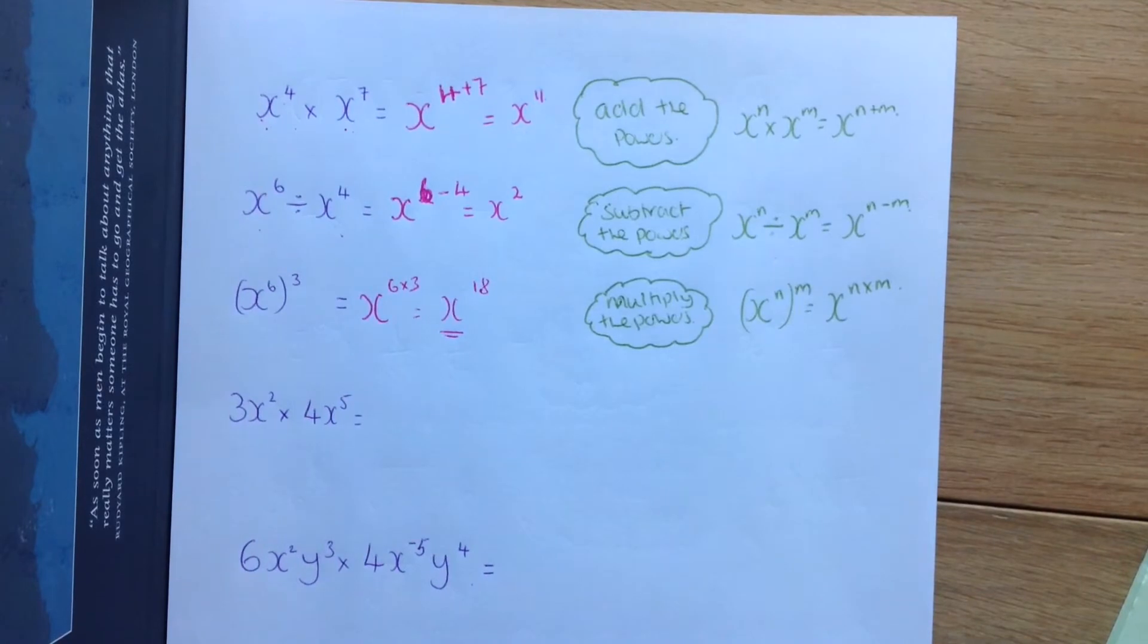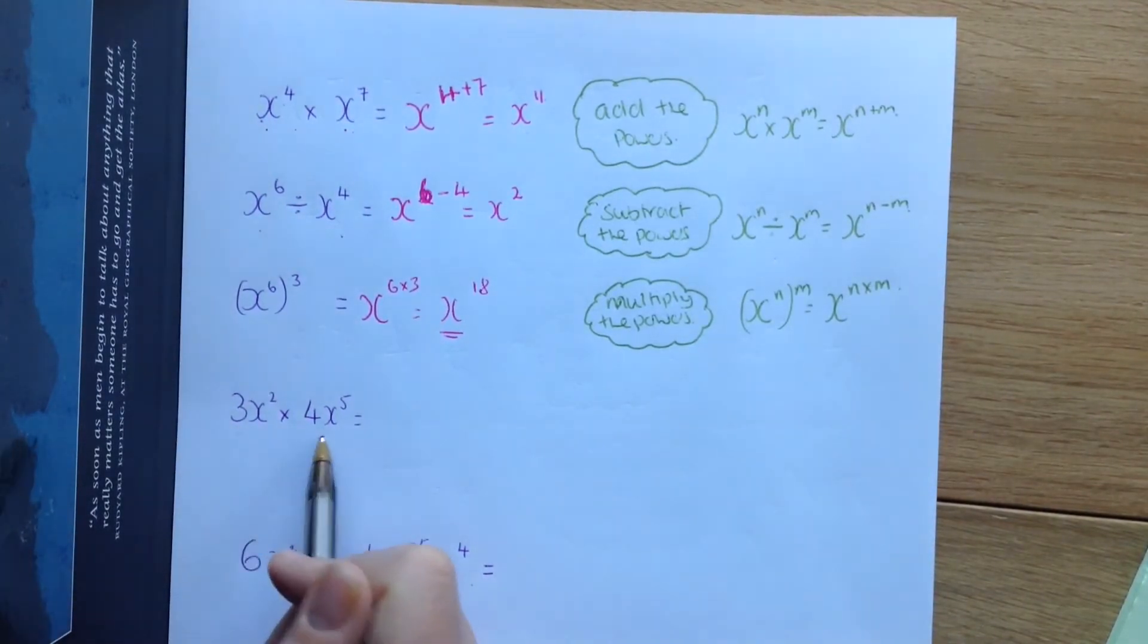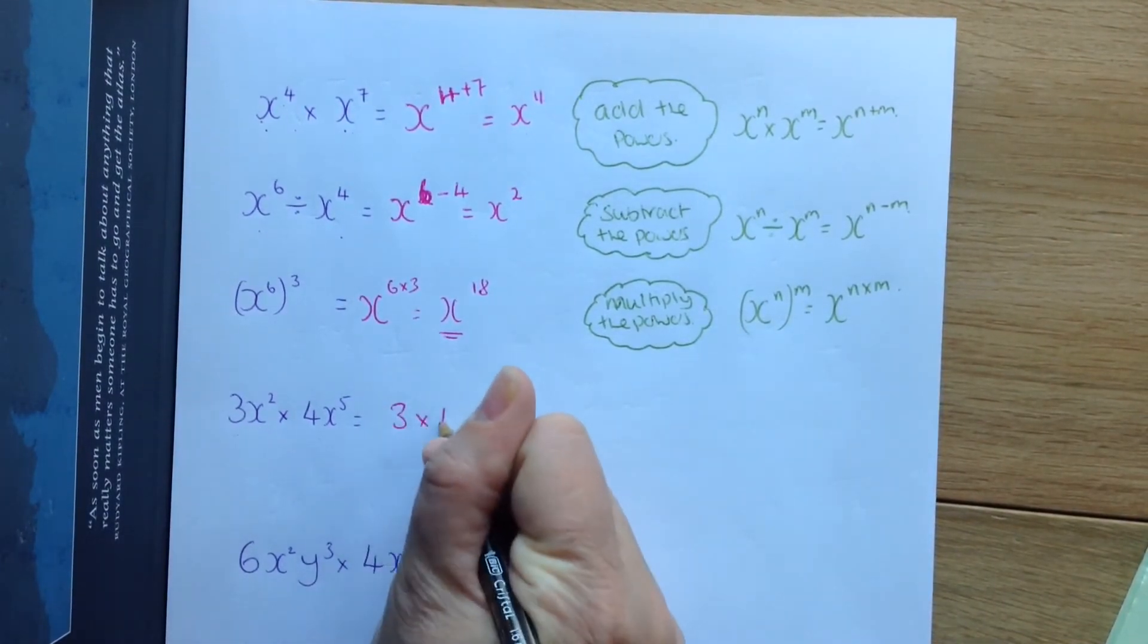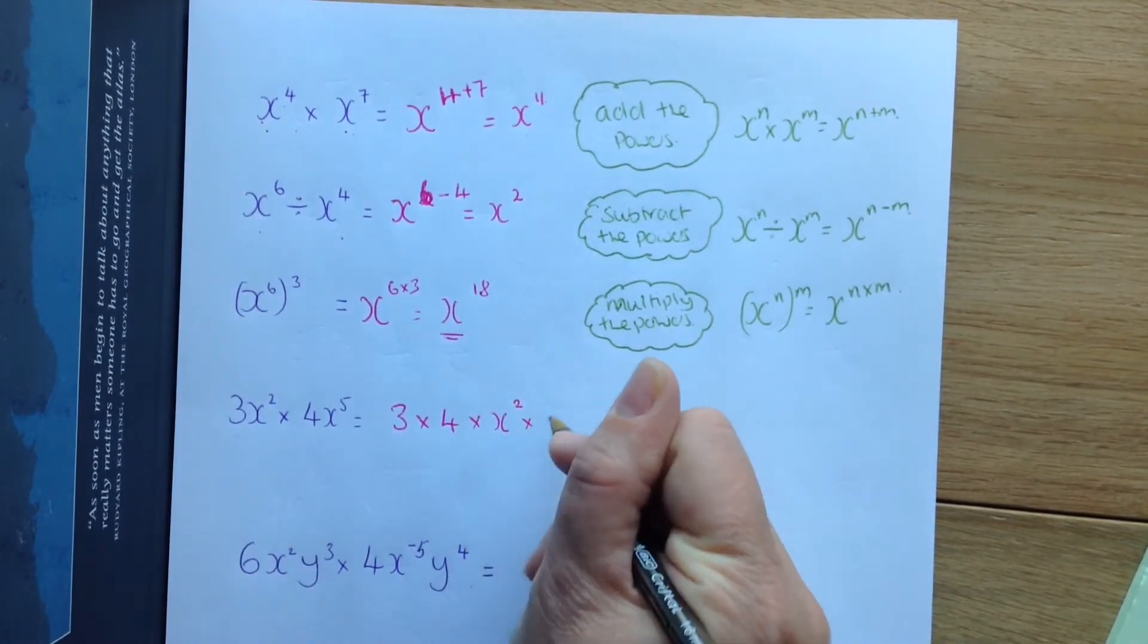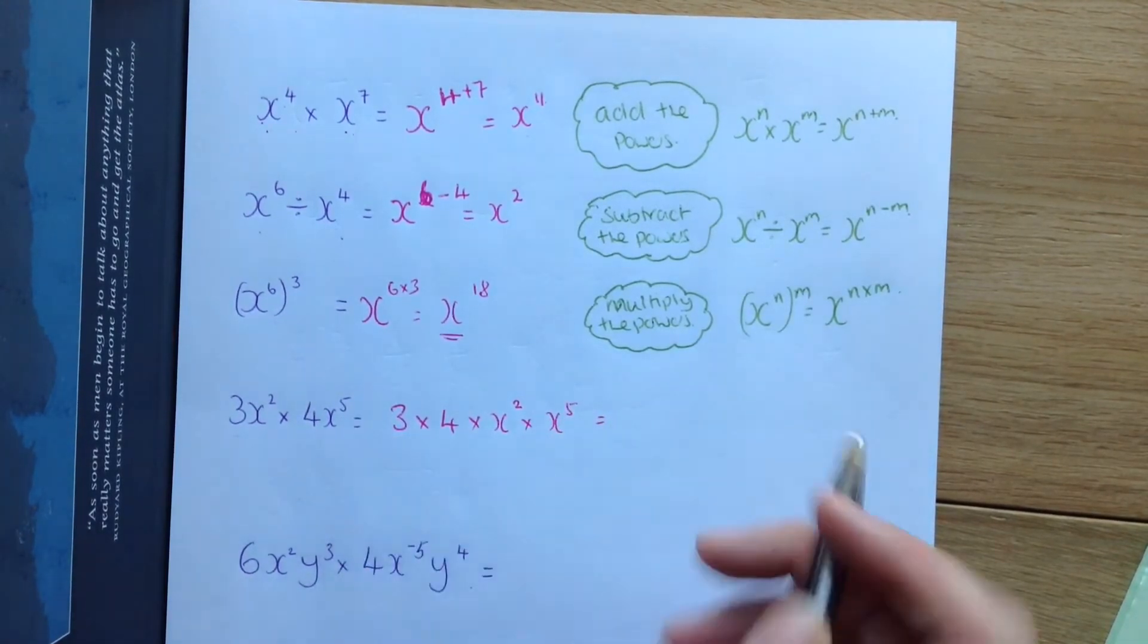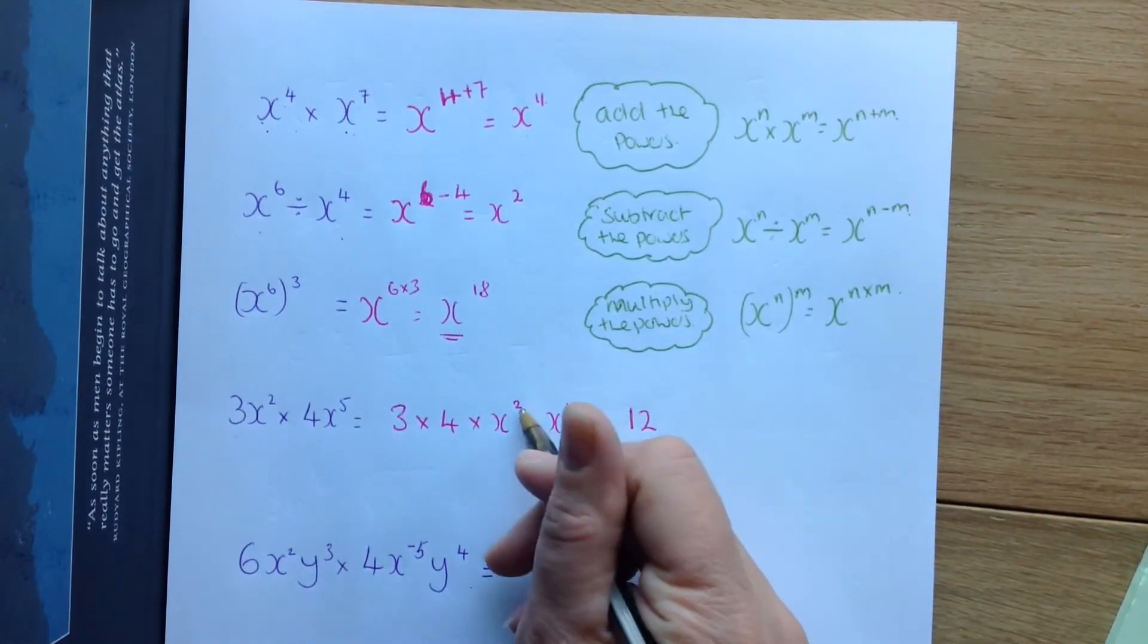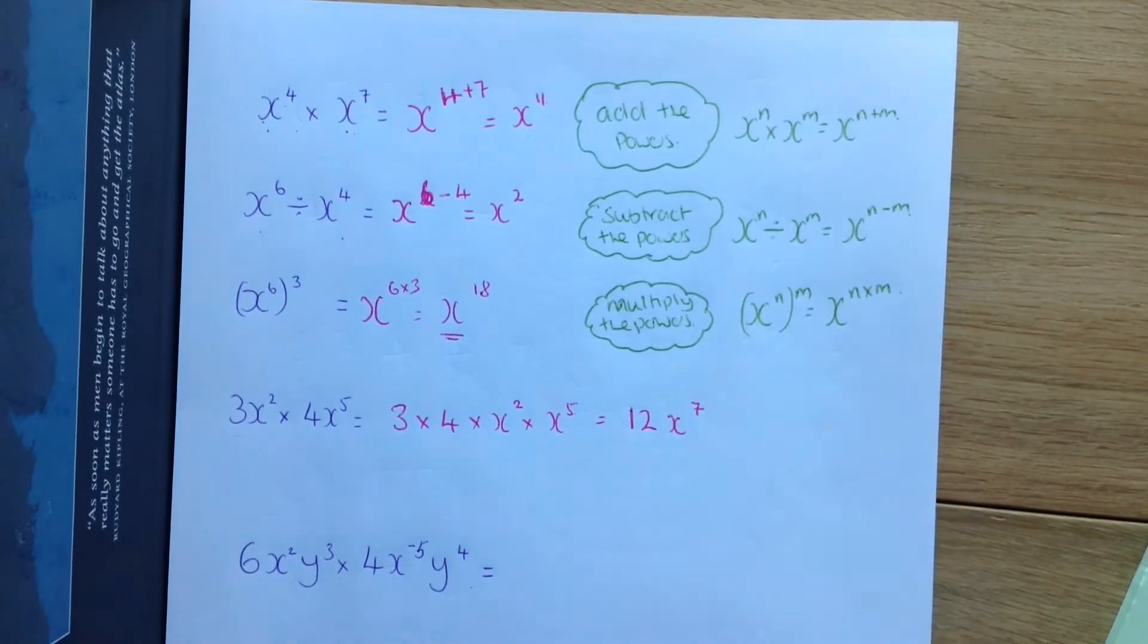We are going to put this together in a series of examples. The first example here, all we need to do is rearrange it slightly. We are going to do 3 times 4 times x to the power of 2 times x to the power of 5. 3 times 4 is 12. Treat those just as normal numbers. When we come here, remember we add the powers because we multiply it.